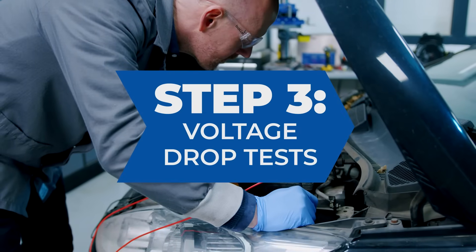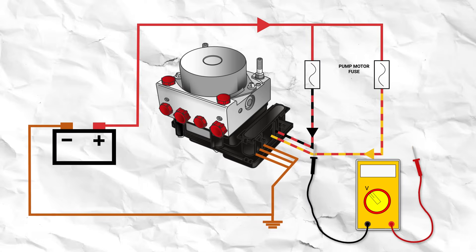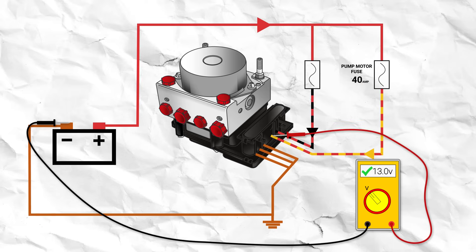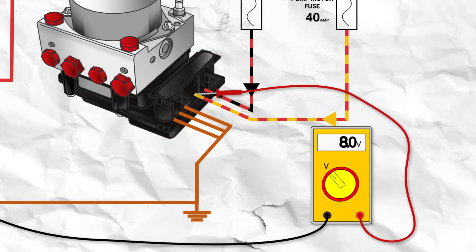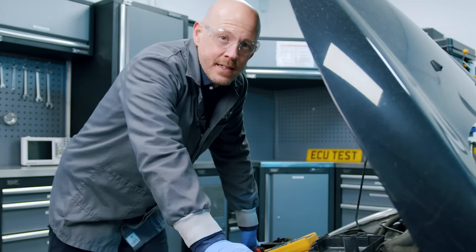The next step is to perform voltage drop tests. Initially check the voltages at the fuse. We're looking for typical battery voltage of around 13 volts. Now check this against the voltage at the ABS supply terminals, which should be the same. Any differences in voltage readings could mean that there is a high resistance in the loom, resulting in excessive voltage drop when the pump motor is activated.